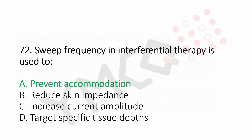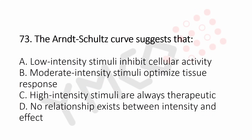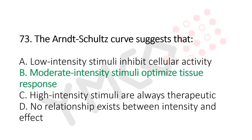Now let's move to question number 73. The Arnold's cause curve suggests that: Option A, low intensity stimuli inhibit cellular activity. Option B, moderate intensity stimuli optimize tissue response. Option C, high intensity stimuli are always therapeutic. Option D, no relationship exists between intensity and effect. And the answer is Option B, moderate intensity stimuli optimize tissue response.